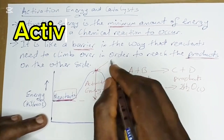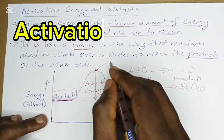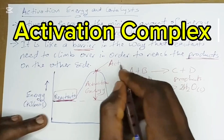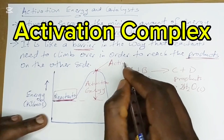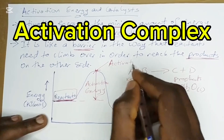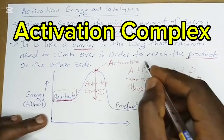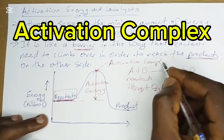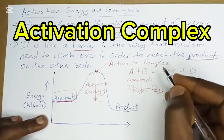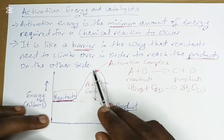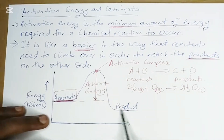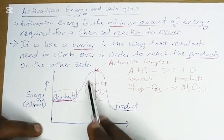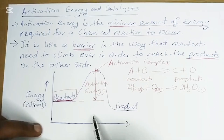At the very tip of this energy barrier is what we call the activation complex — that is the highest point you need to reach before you go to the product. That's the activation complex.